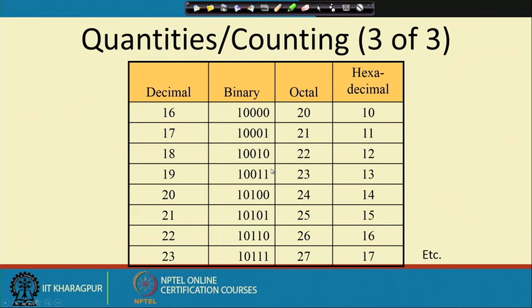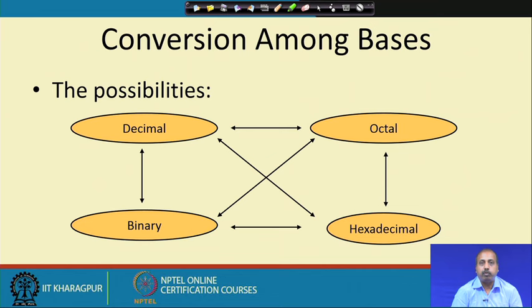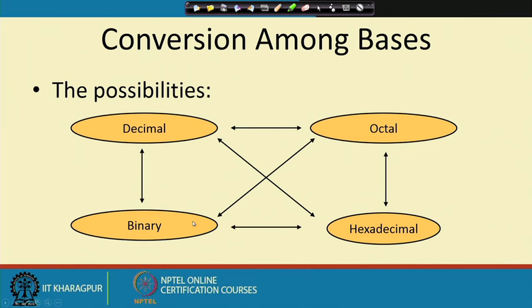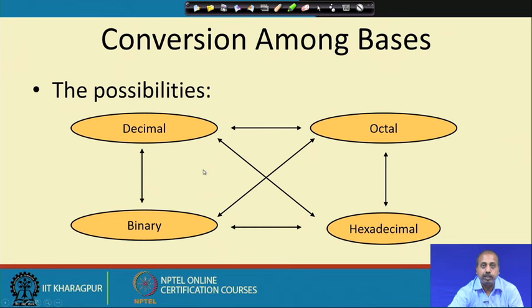This talks about conversion between the bases. We can convert between all these number systems — decimal to binary, binary to decimal, decimal to octal, octal to decimal, and so on. Ultimately a computer understands the binary number system, so truly speaking in a digital circuits course we do not need to learn about other number systems. We look at their conversions just to feel comfortable with the binary number system.